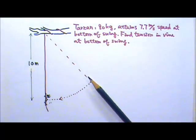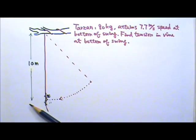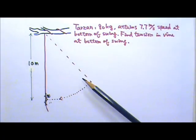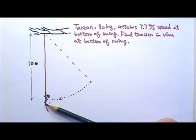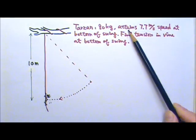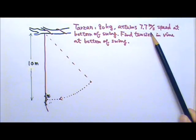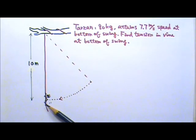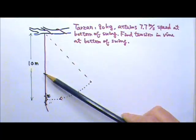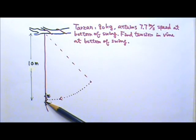80 kg Tarzan tries to cross a chasm by swinging at the end of a long hanging vine. If the radius of his swing is 10 meters and he attains a speed of 7.7 meters per second at the bottom of the swing, what must the tension in the vine be at the bottom of the swing?